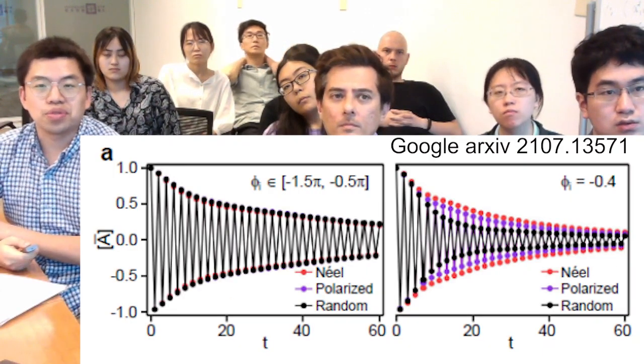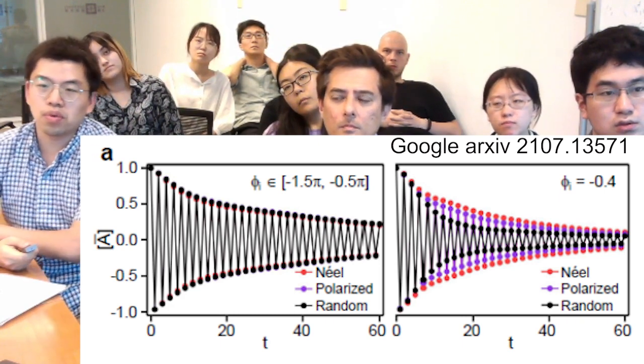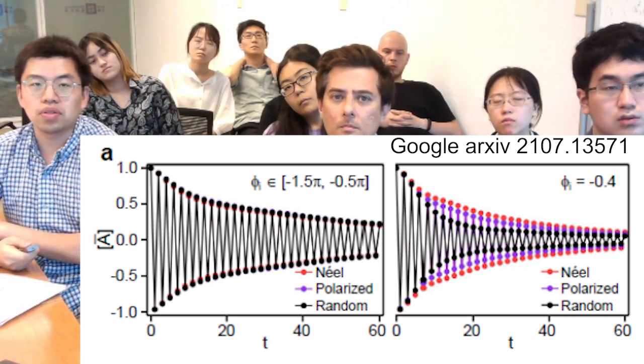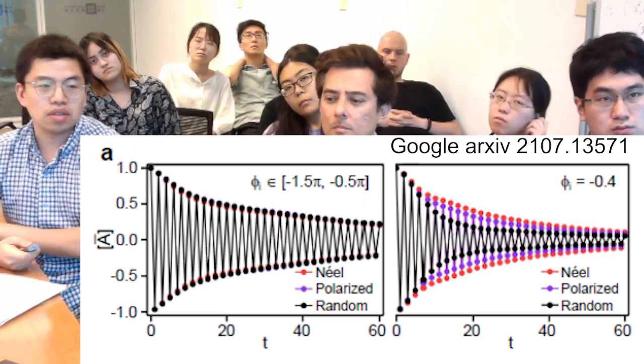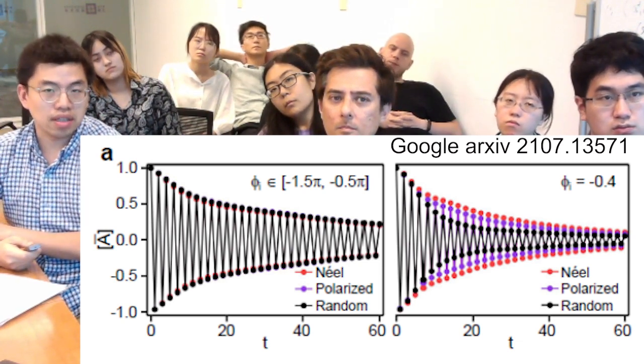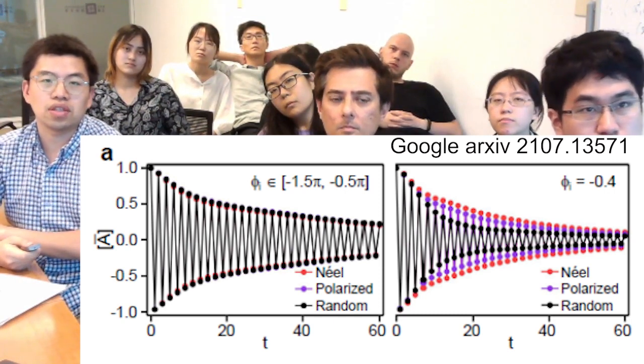This graph shows you the importance of the disorder. Another important characteristic of time crystal is that you have to show this subharmonic response no matter what your initial state is. Whatever the choice of the initial state, you must have this.